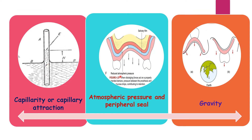The next factor is atmospheric pressure and peripheral seal. When a dislodging force acts on a properly extended denture, the pressure between the prosthesis and the mucosa drops, contributing to retention. Atmospheric pressure is referred to as an emergency retentive force or temporary restraining force. The last factor is gravity — the natural force which aids in the retention of the mandibular denture, especially when there is more weight and other retentive forces and the factors are marginal.